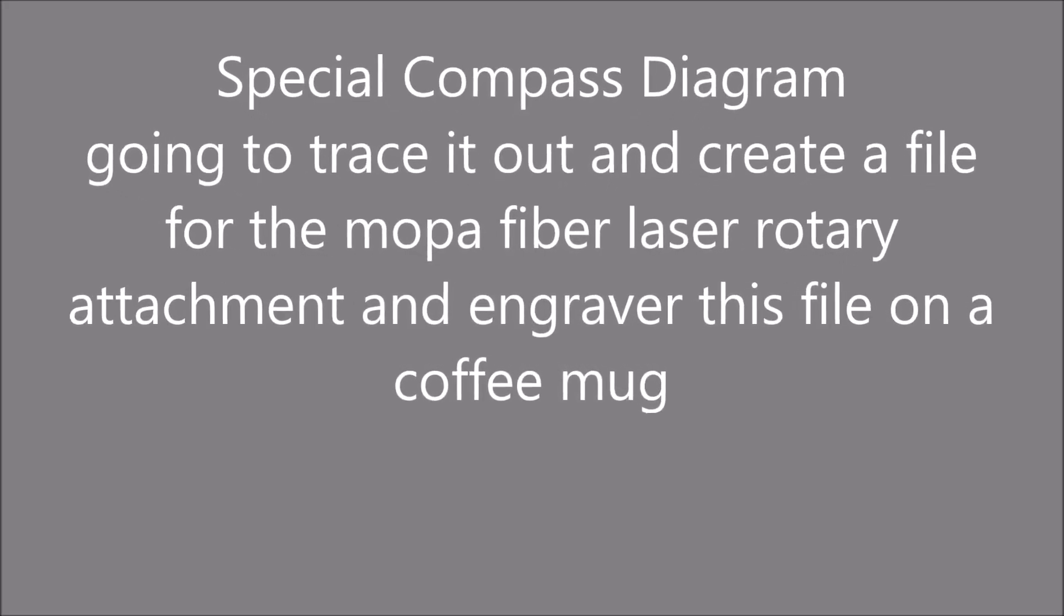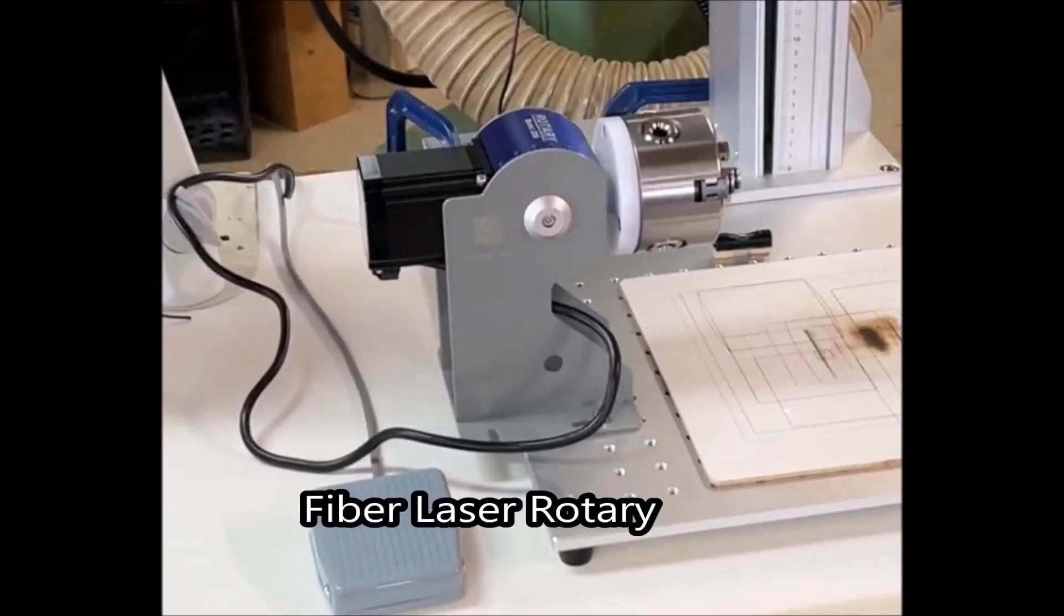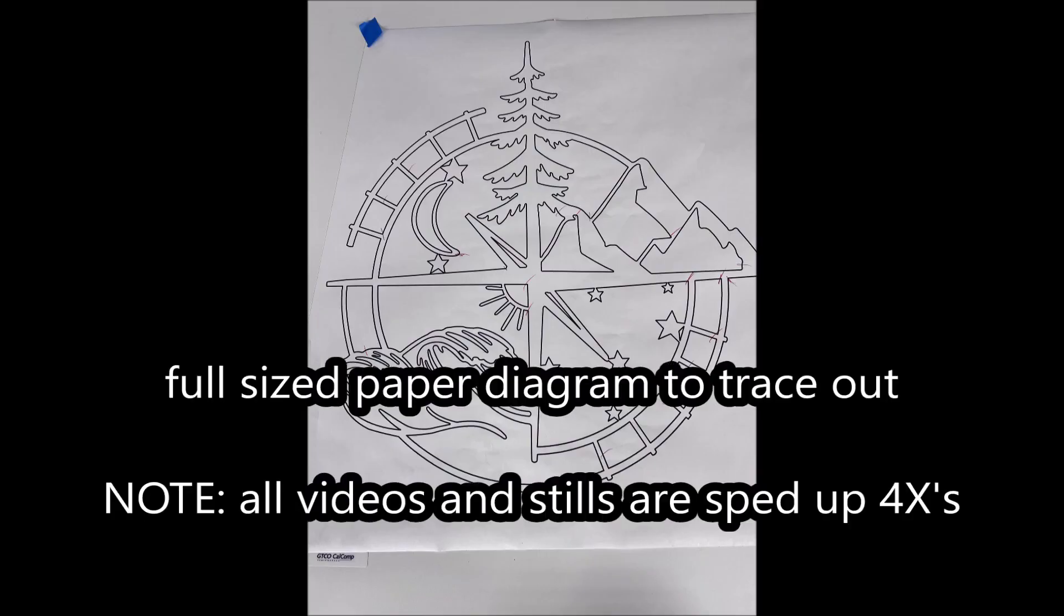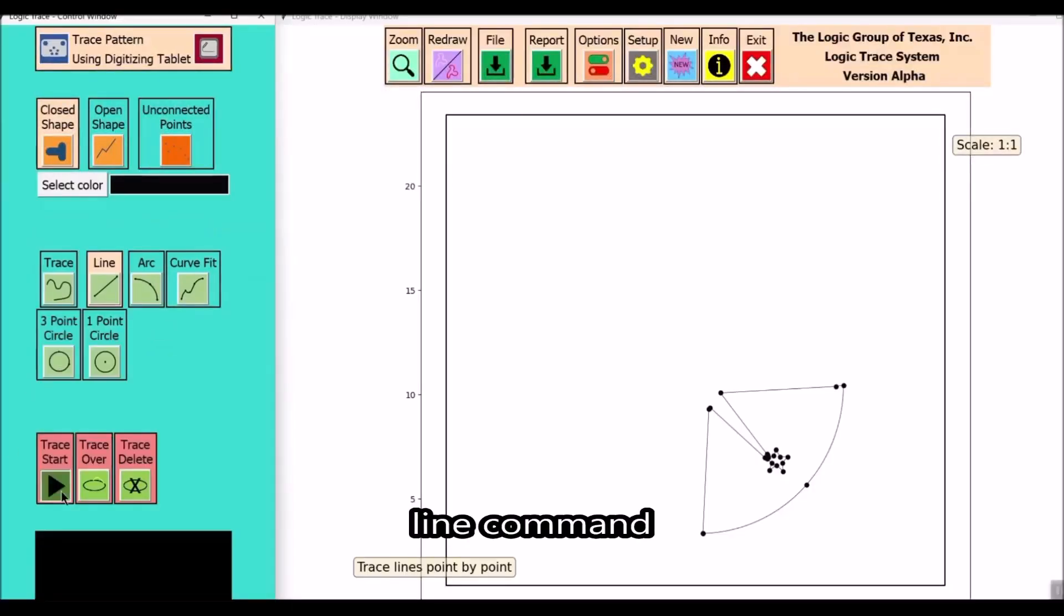I'm going to be using this compass diagram again. This time I'm going to use it for the fiber laser rotary. I'm going to trace out this diagram using Logitrace and I'm going to create a file for the rotary.